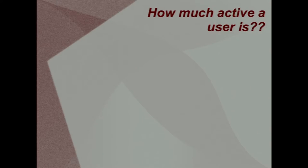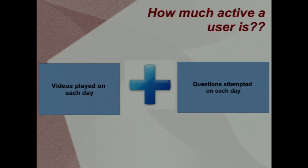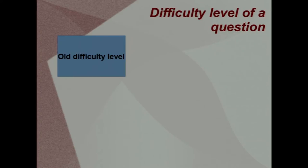Feature 1 is how active a user is, based on two types of activities: the number of videos played by a particular user on each day of the course, and the number of questions attempted by that user each day. Joining both these tables gives an approximate overview of how active a user is on each day. Feature 2 is the difficulty level of a question — since we cannot judge a student only on how many questions he solved or how many attempts he took, we associate a difficulty level with each and every question.